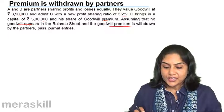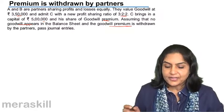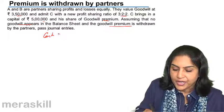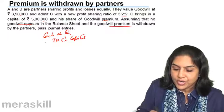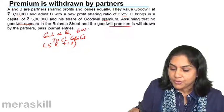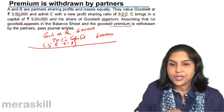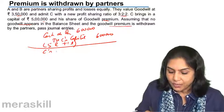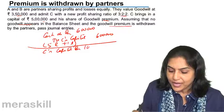This is the same problem as before; the only extra thing is that the money is withdrawn by the partners. For the entries: Cash Account debit to C's Capital Account. The total amount brought in is 5 lakh for capital and 1 lakh towards goodwill premium, so the total amount brought in by C is 6 lakh.